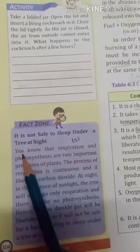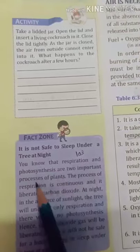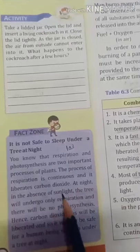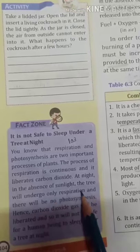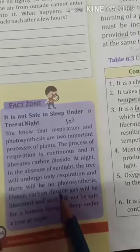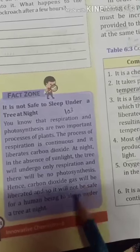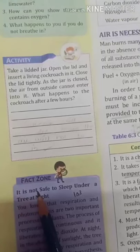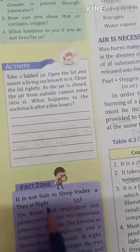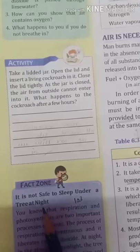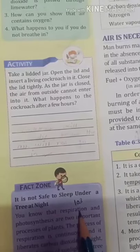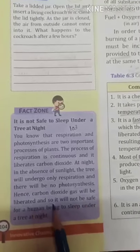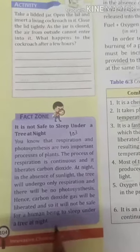Respiration and photosynthesis are two important processes of plants. The process of respiration is continuous and it liberates carbon dioxide. At night, in the absence of sunlight, the tree will undergo only respiration and there will be no photosynthesis. Hence carbon dioxide gas will be liberated, and so it will not be safe for human beings to sleep under a tree at night.